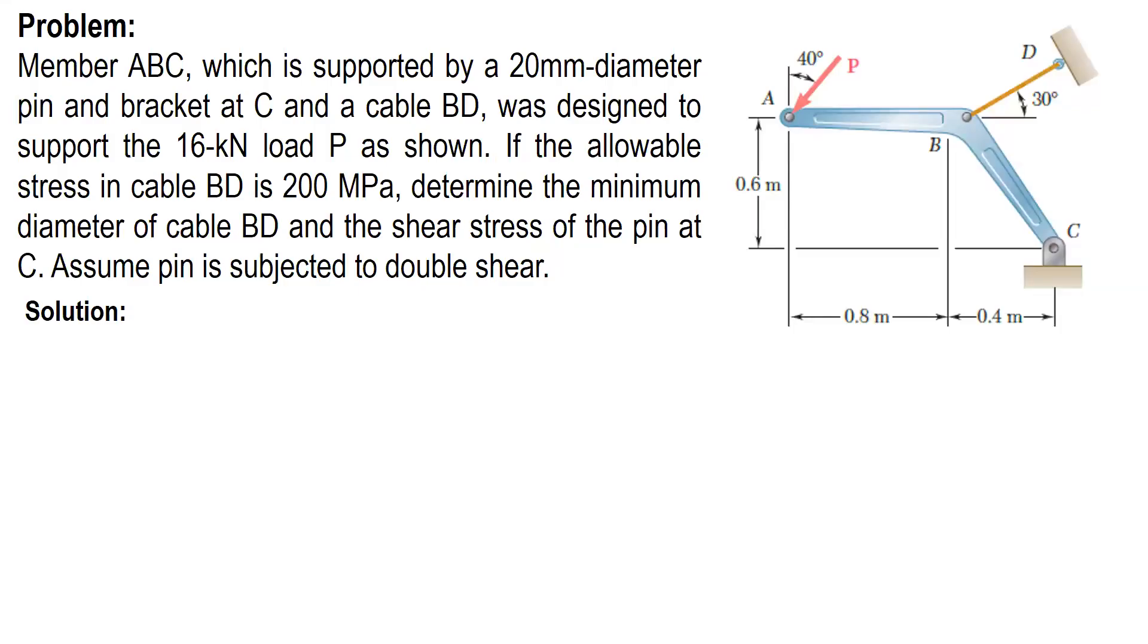Here is another problem about simple stress. Member ABC, which is supported by a 20-millimeter diameter pin and bracket at C and a cable BD, was designed to support the 16-kilonewton load P as shown. If the allowable stress in cable BD is 200 MPa, determine the minimum diameter of cable BD and the shear stress of the pin at C. Assume pin is subjected to double shear.